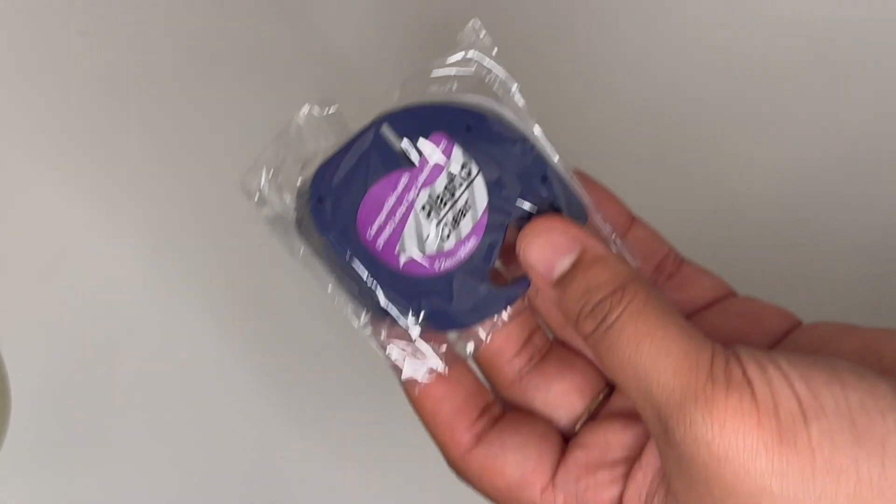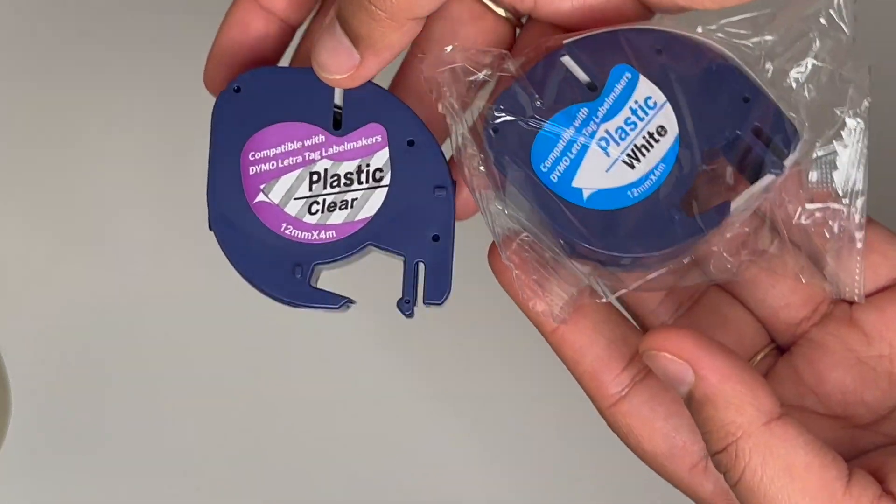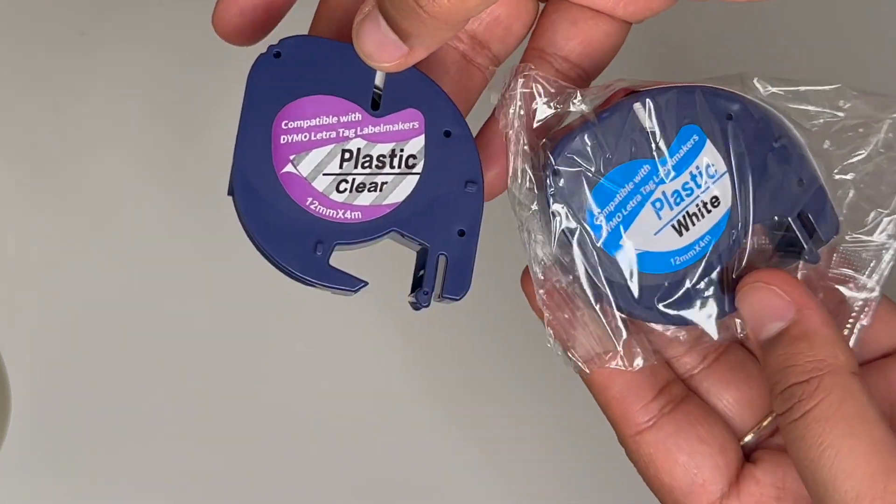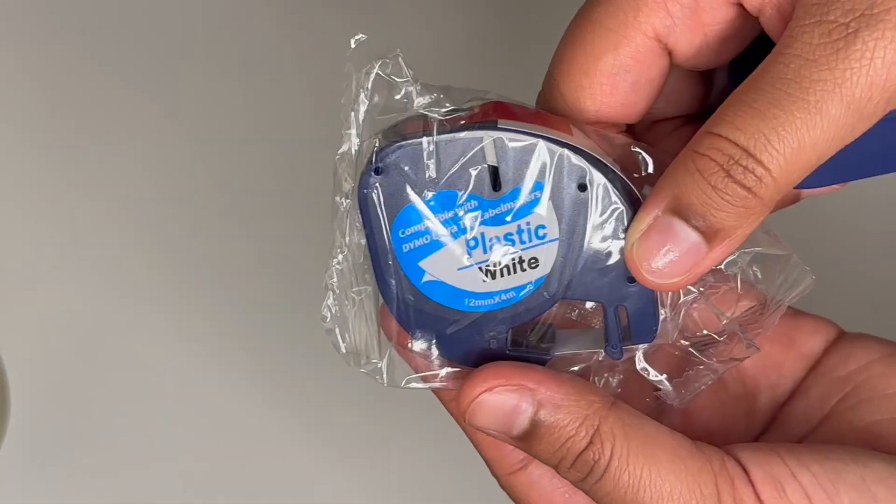Next thing I got the clear and white plastic, the set of them on Amazon. These are for my label maker and I use the plastic ones for my task cards and I use the white ones for just any labels that I may have.